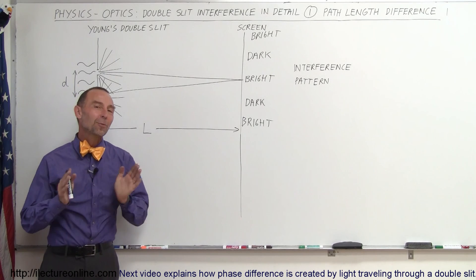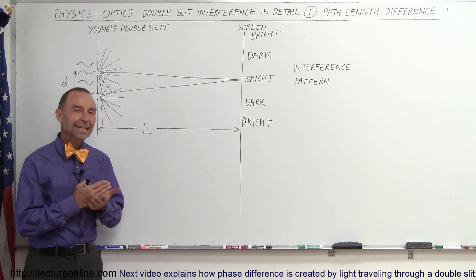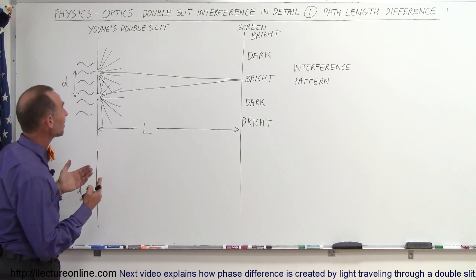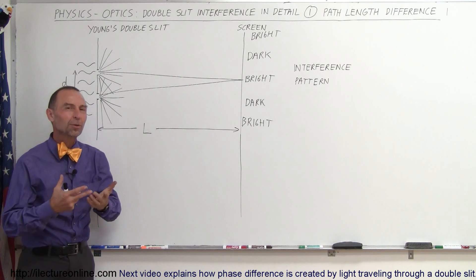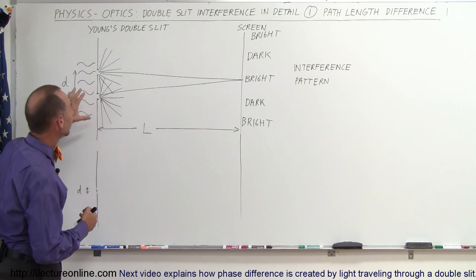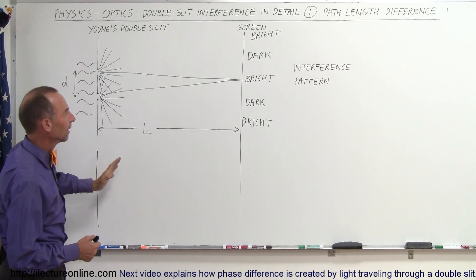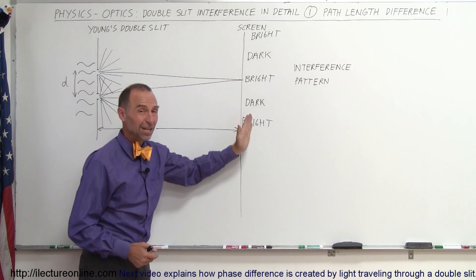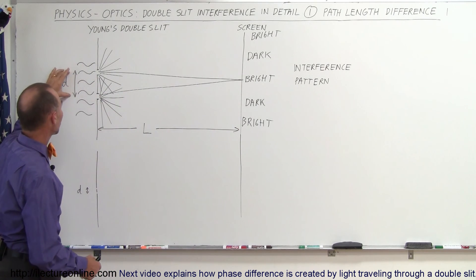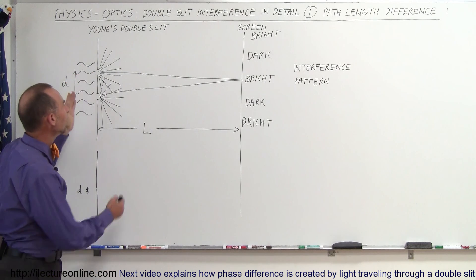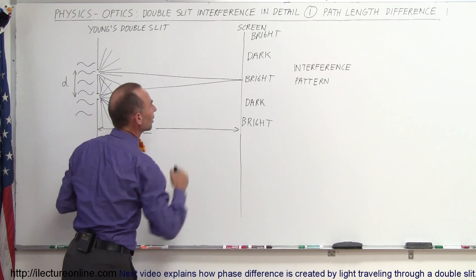Welcome to ElectronLine. We're going to start a new series in a lot more detail about light interference. Here we have an example: a double slit called Young's double slit, because the experiments and write-ups were first done by Young, describing how light interacts when it shines through a double slit. At the far end we have a screen at a very large distance away from the double slits. The distance between the slits, called D, is very tiny compared to the distance from the slits to the screen.